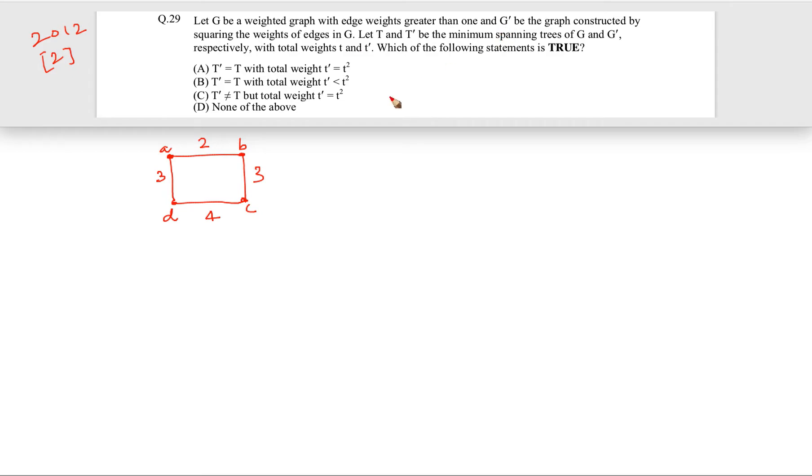Edge weights are greater than 1, so let's say 2, 3, 3, 4. Now this is G. They are saying that another graph G prime is constructed by squaring the weights of the edges in G. So basically the same graph can be transformed into another graph G prime where they have squared all the edge weights.